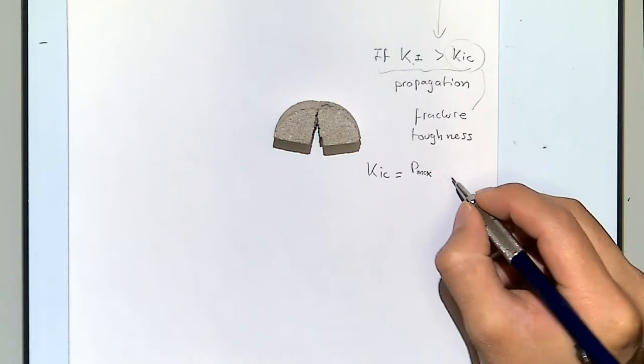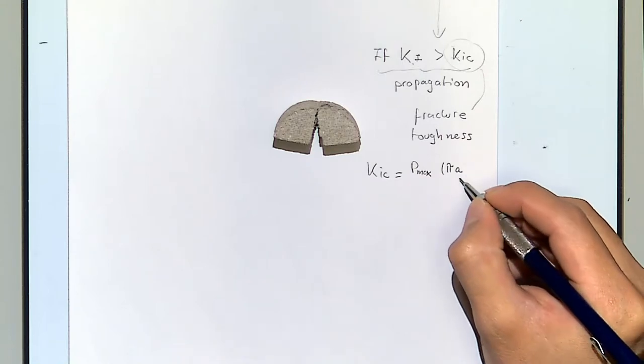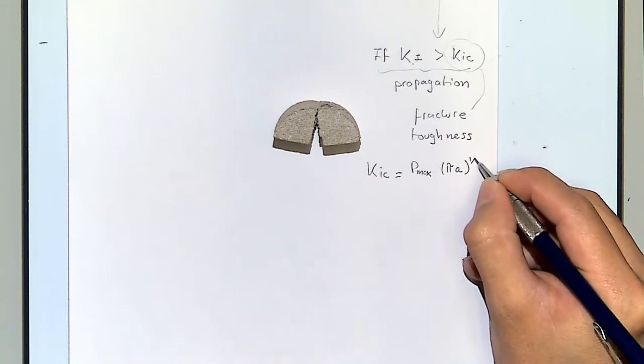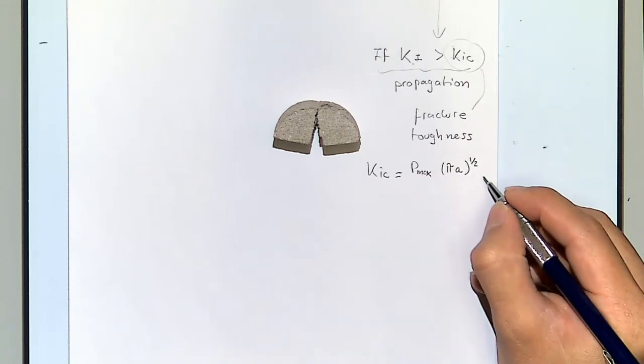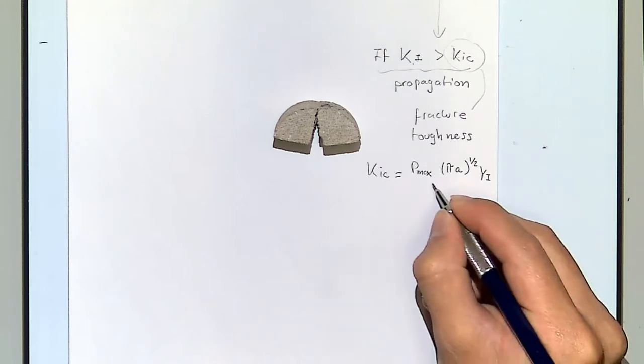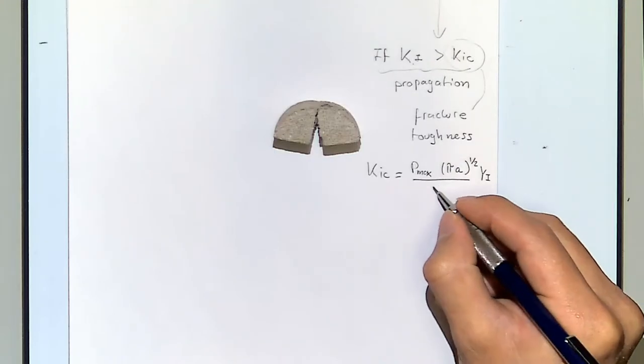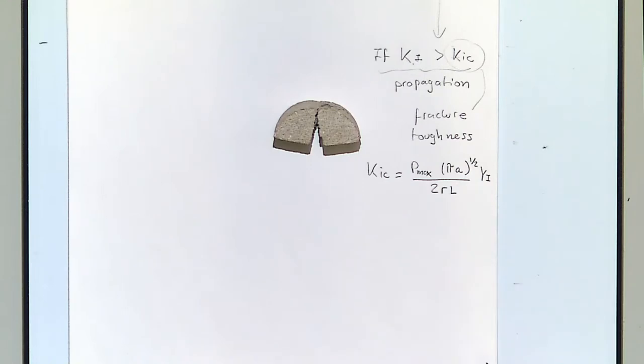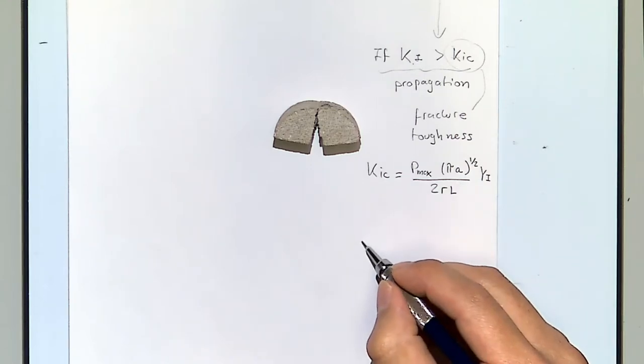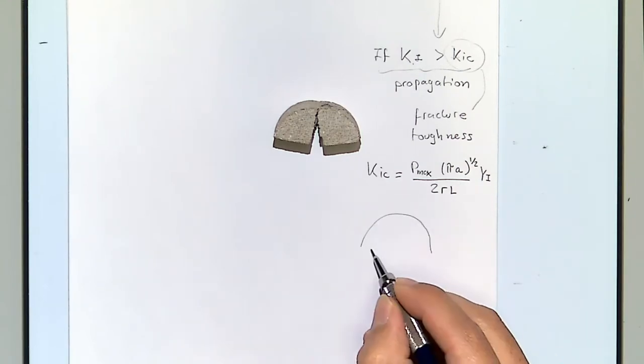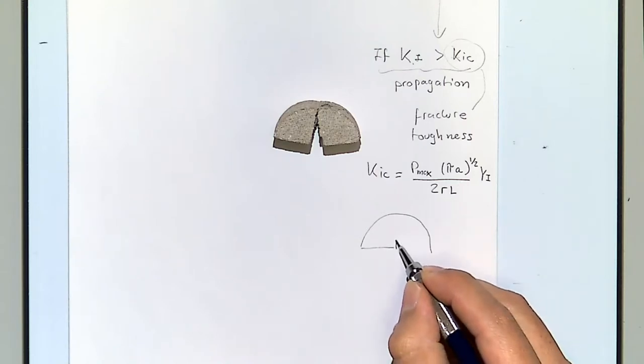It's P_max by a square root of pi times a, divided by 2rL. I'm going to explain in a minute what this is. These are the dimensions of this test. Something very important here is that there is a notch.